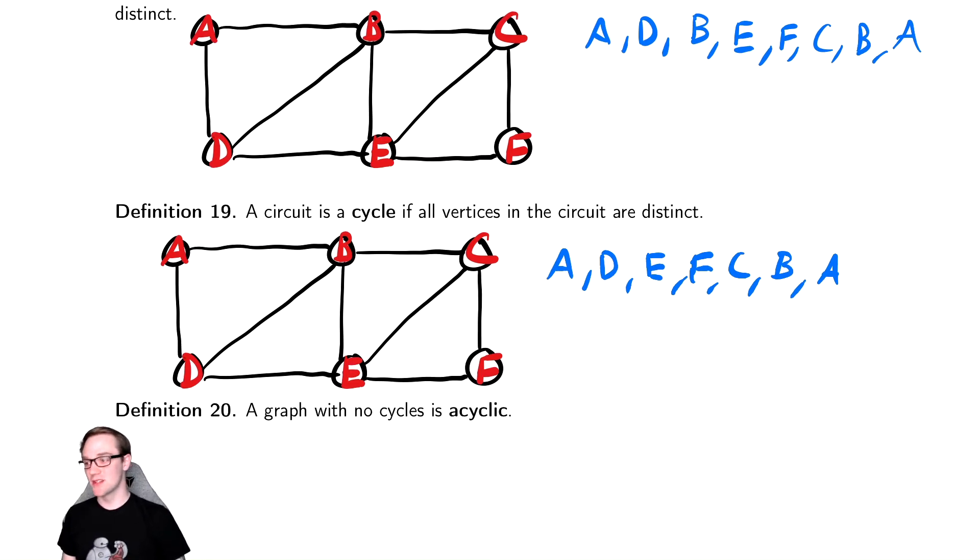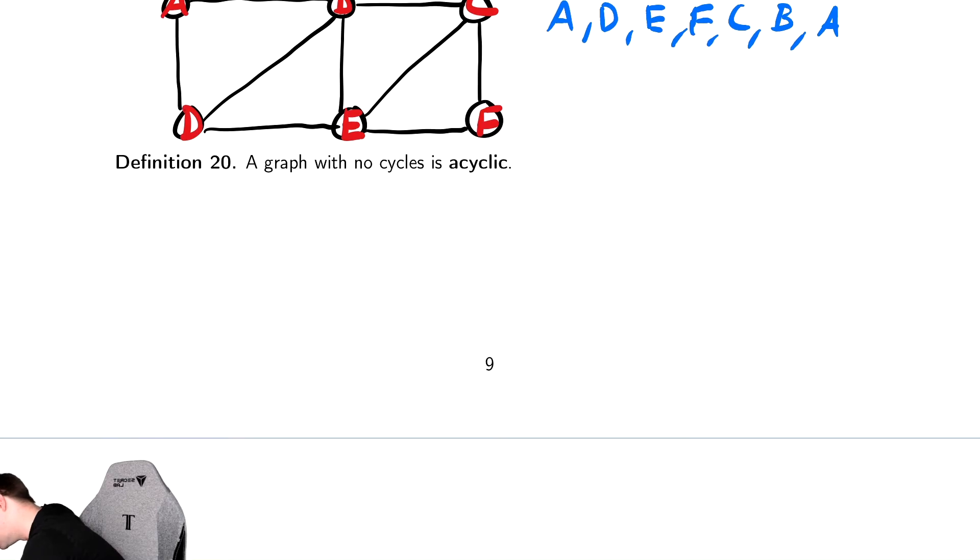Cycles turn out to be the most important. So in general, that will be pretty much all that we talk about in this class, because they're really important in a graph. A graph is acyclic if it has none of these things. Notice being acyclic seems a little weird, so let's draw an example of a graph that is acyclic. We're going to have the following graph, which looks like this.